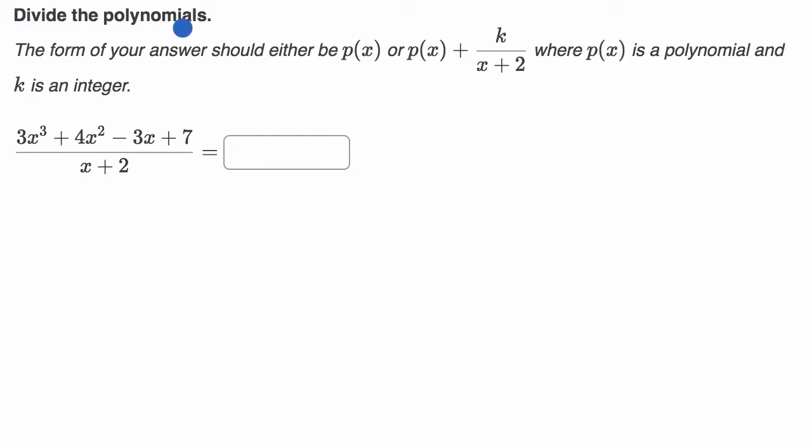We're told divide the polynomials. The form of your answer should either be just a clean polynomial or some polynomial plus some constant over x plus two, where p of x is a polynomial and k is an integer.